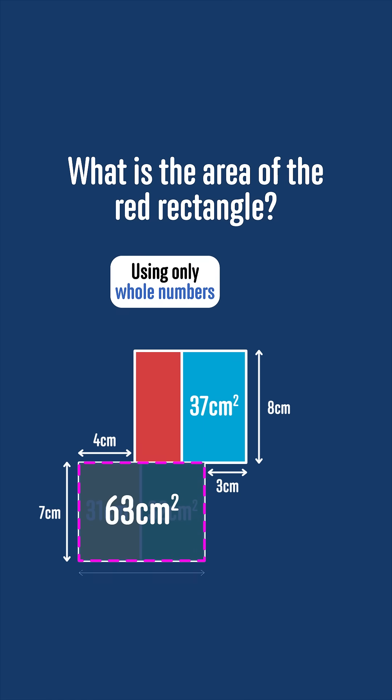One of its side lengths is 7, and so the length of its other side must be 63 divided by 7, which is 9cm.